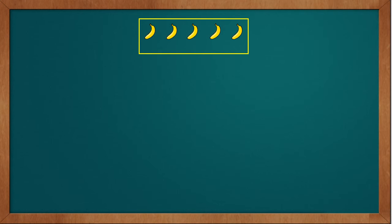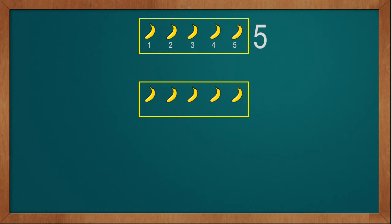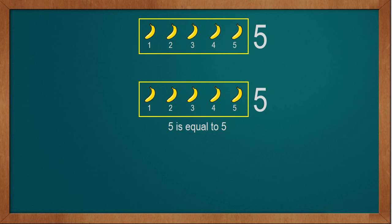Now we will compare 5 with another number. First we will take 5 bananas: 1, 2, 3, 4, 5. We have 5 bananas. Now we will take 5 more bananas: 1, 2, 3, 4, 5. We have a total of 5 bananas. Here we see the quantity of 5 bananas is the same as the quantity of 5 bananas. So 5 is equal to 5. We represent it as: 5 equal-to sign and 5.